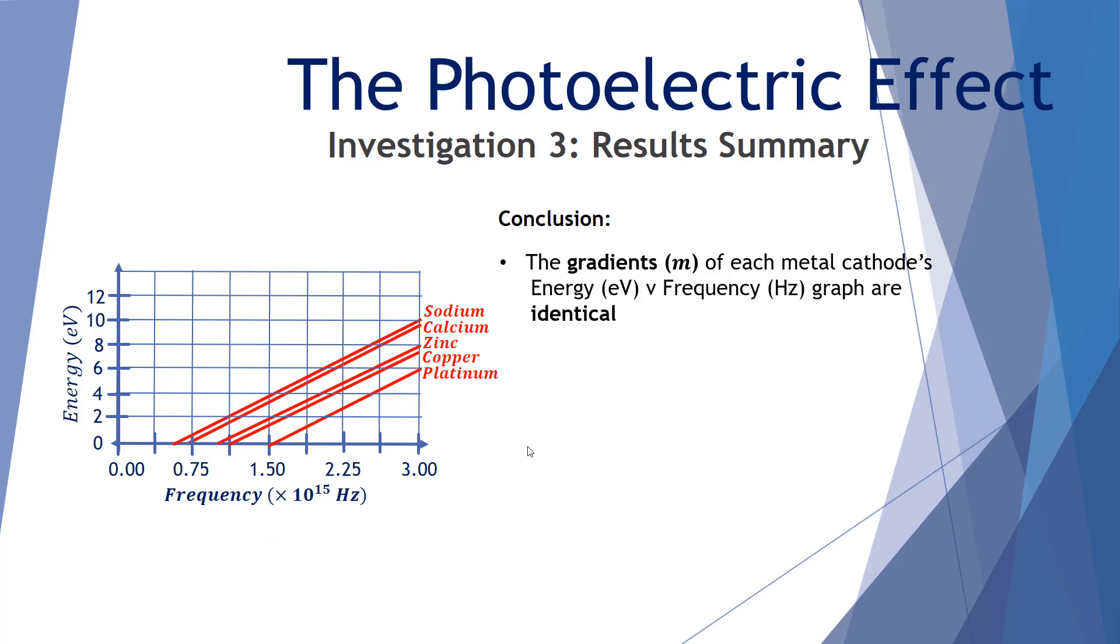First of all, the gradients of each metal cathode's energy versus frequency graph are identical. The gradient is known as Planck's constant, and Planck's constant, which we use as a symbol h, has a value of 4.14 by 10 to the negative 15 electron volt seconds. Let's explain how this works. We know that a gradient is effectively a rise over a run. Well, the rise of these lines is measured in energy in electron volts. The run on the x-scale is measured in frequency in hertz. So it's electron volt per hertz. Now a hertz is an event per second, it's a rate of something. So it's really electron volts per per second. So when you divide by a fraction, you effectively multiply by the reciprocal. So instead of saying electron volts per hertz, this ends up being electron volt seconds.